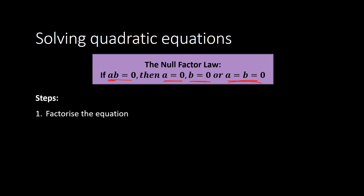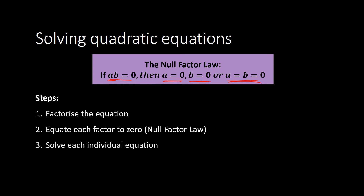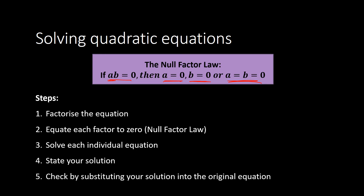Here are our steps. First, factorize the equation — we're not doing that today; that'll be next lesson. Second, equate each factor to 0 using the null factor law. Third, solve each individual equation — they'll be straightforward linear equations. Then state our solution, and finally check by substituting back in to make sure it works.